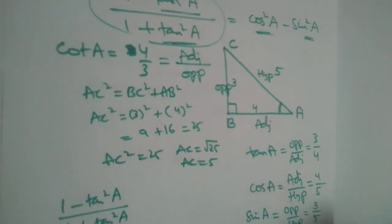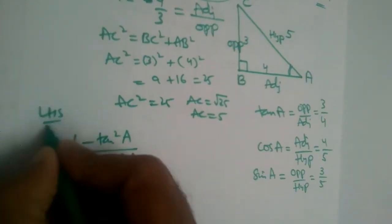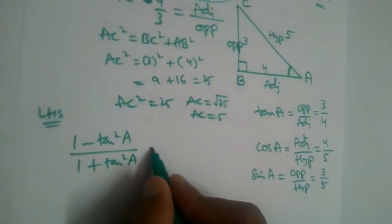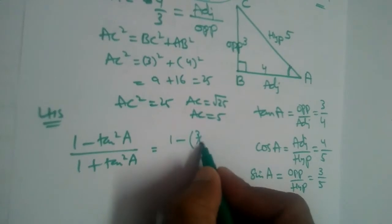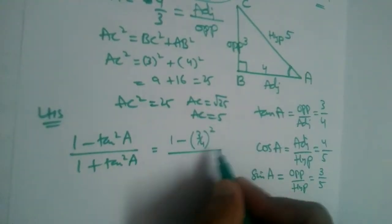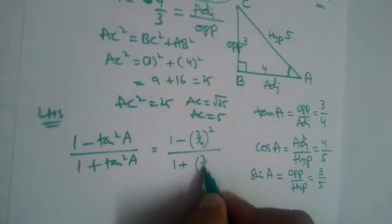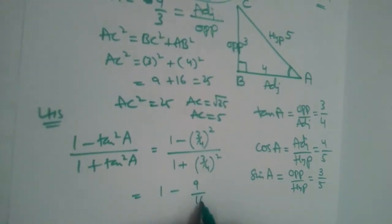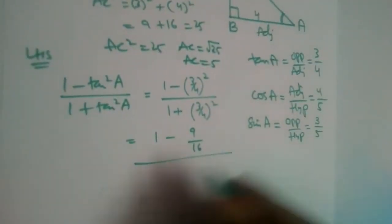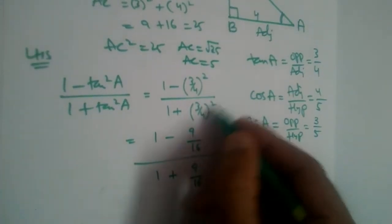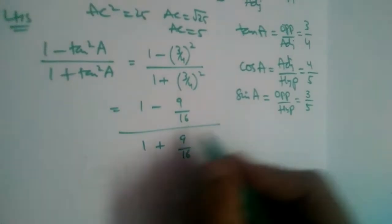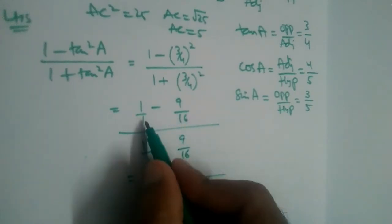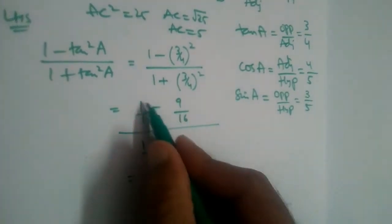Let us check the LHS: (1 - tan²a) / (1 + tan²a). Substituting tan(a) = 3/4, we get (1 - (3/4)²) / (1 + (3/4)²) = (1 - 9/16) / (1 + 9/16). The denominators differ, so simplifying the numerator: (16 - 9)/16.